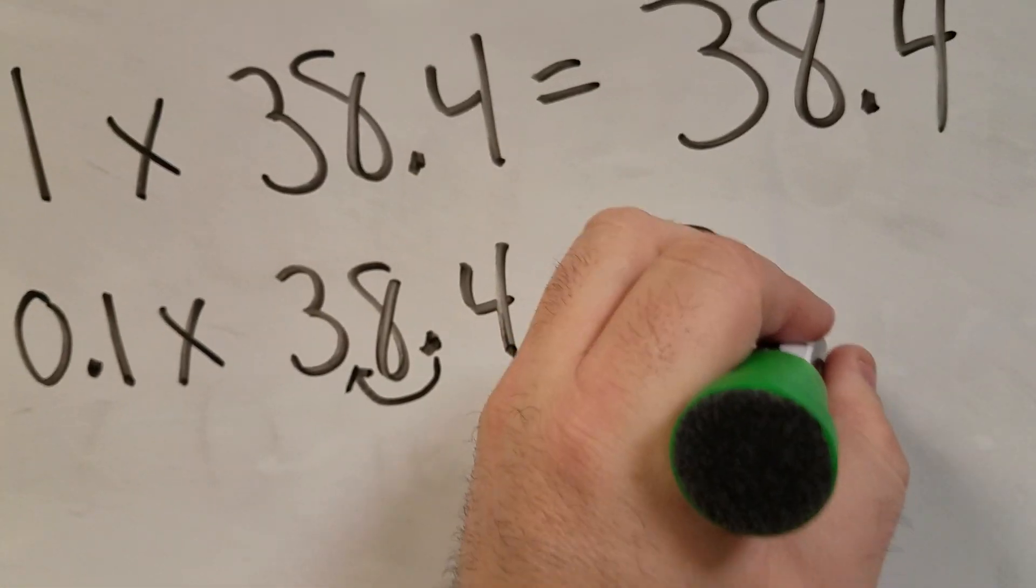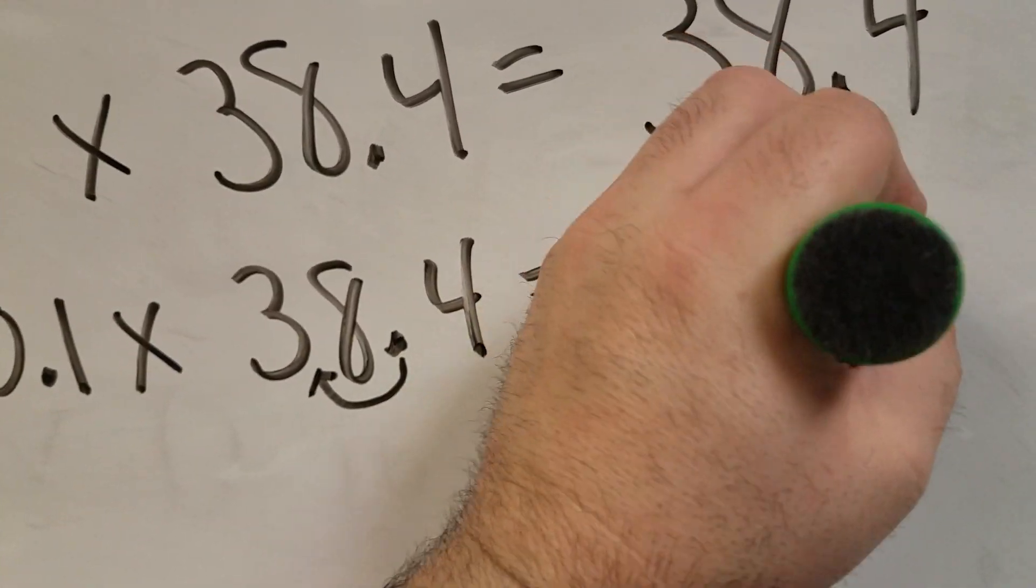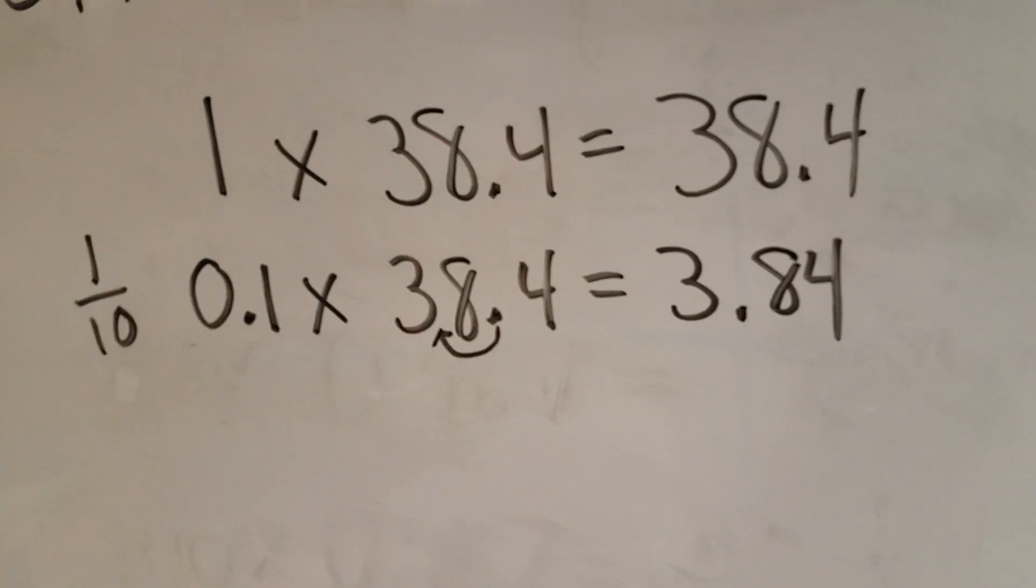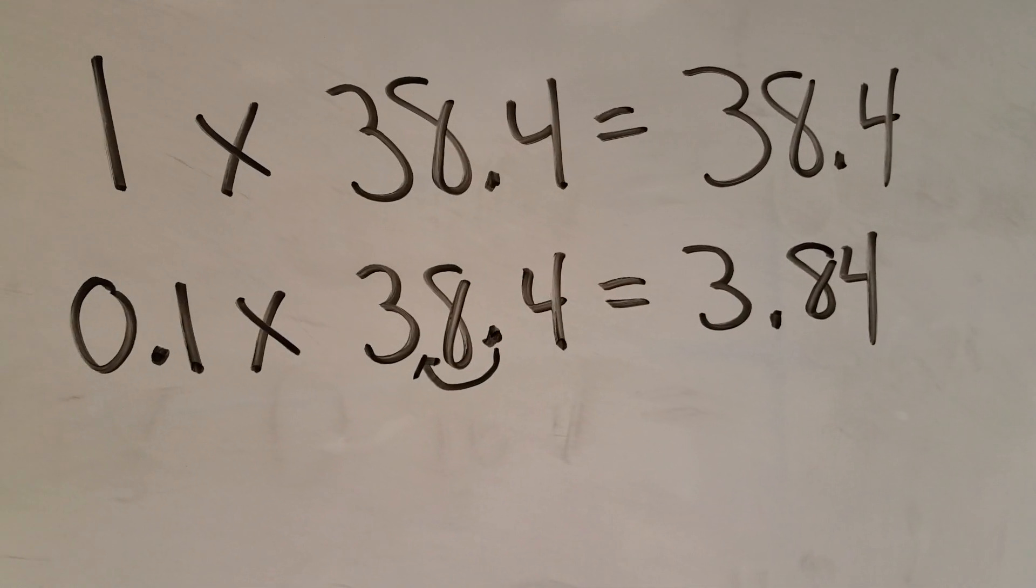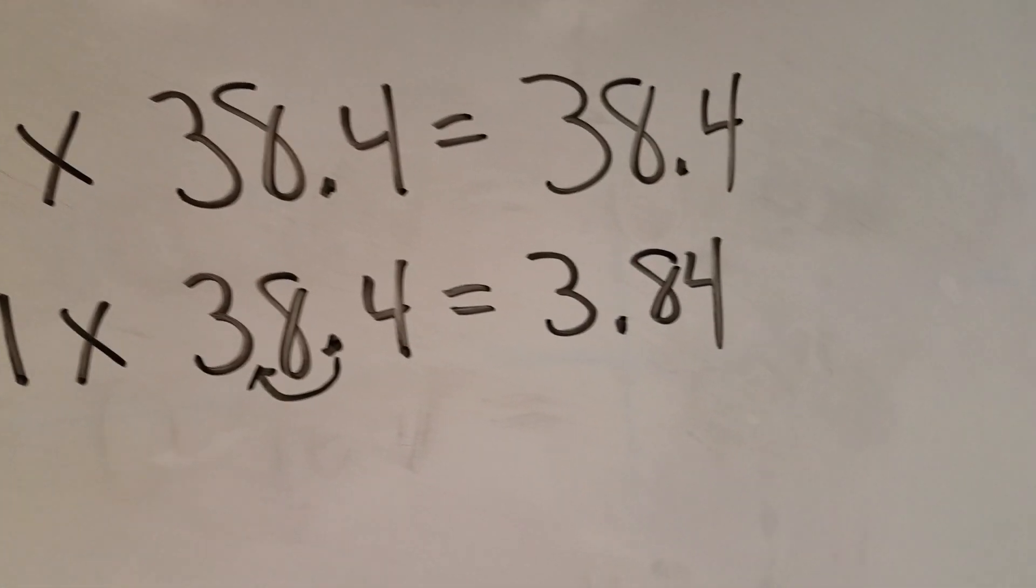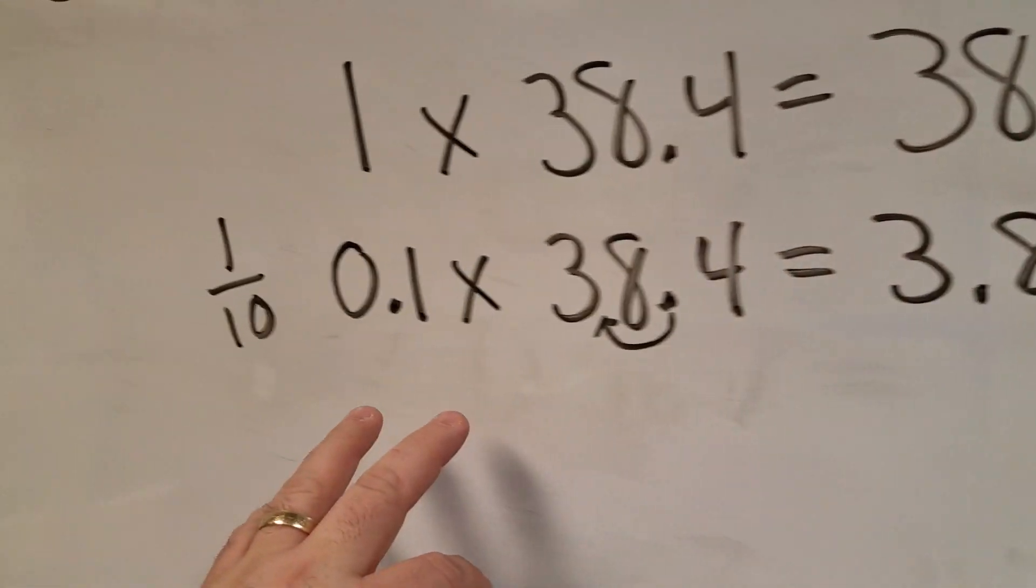And I got 30, I'm sorry, 3.84. 1 one-tenth of a power means it's going to move over. So my answer is going to get smaller. Here we go.